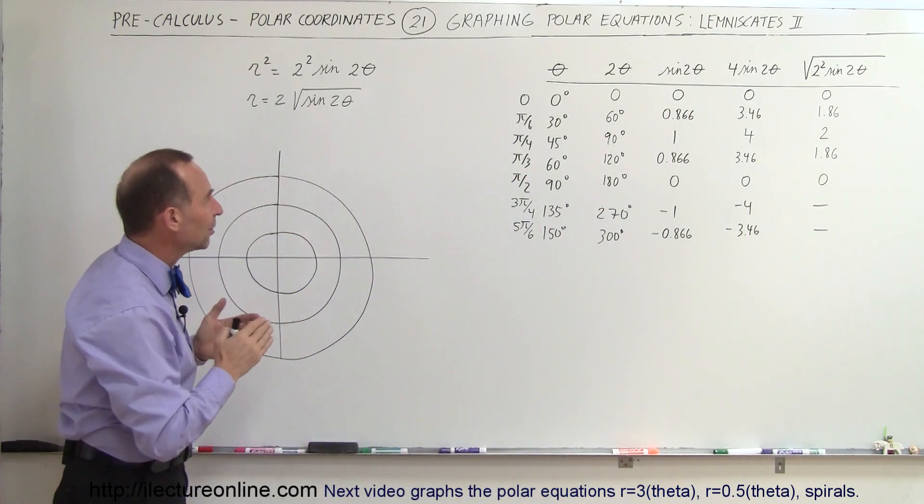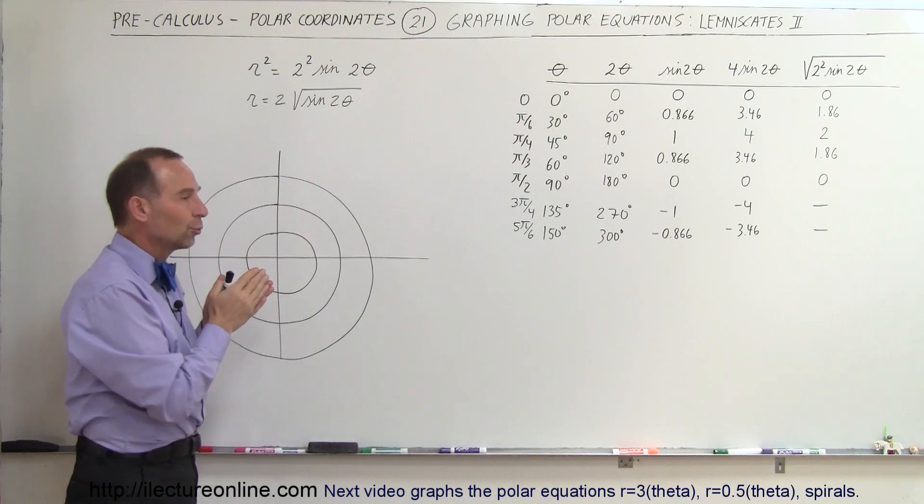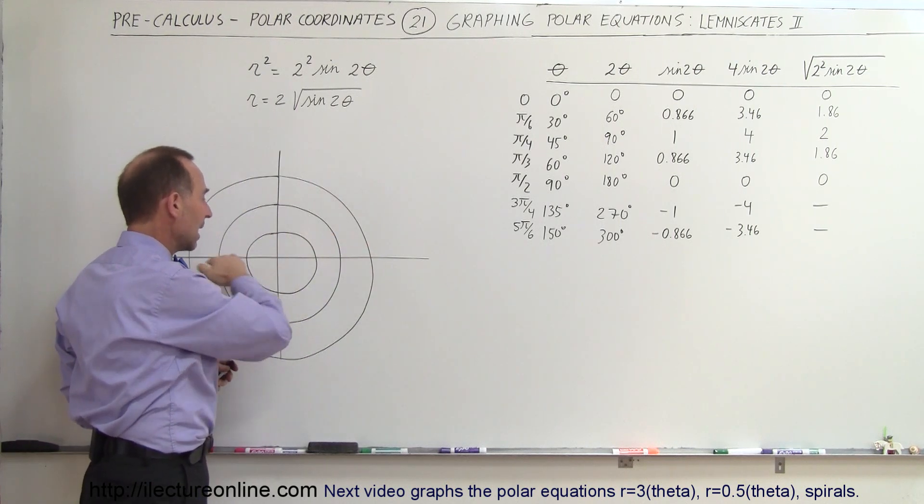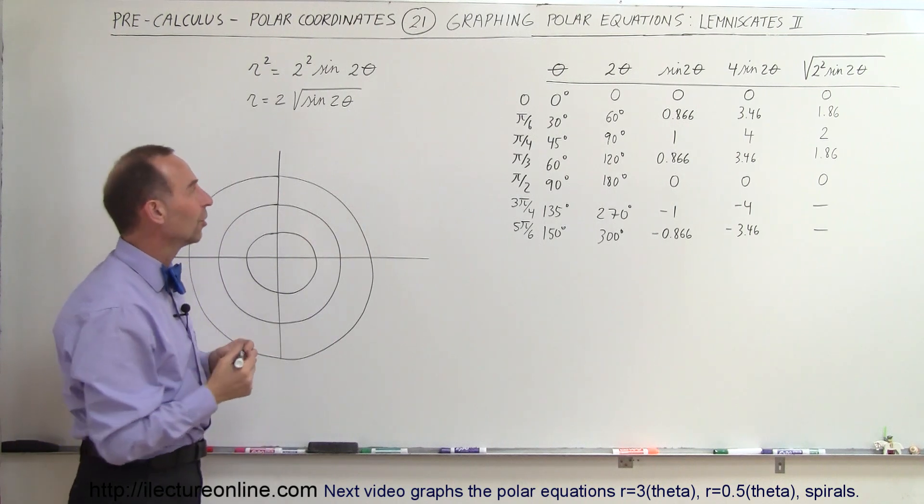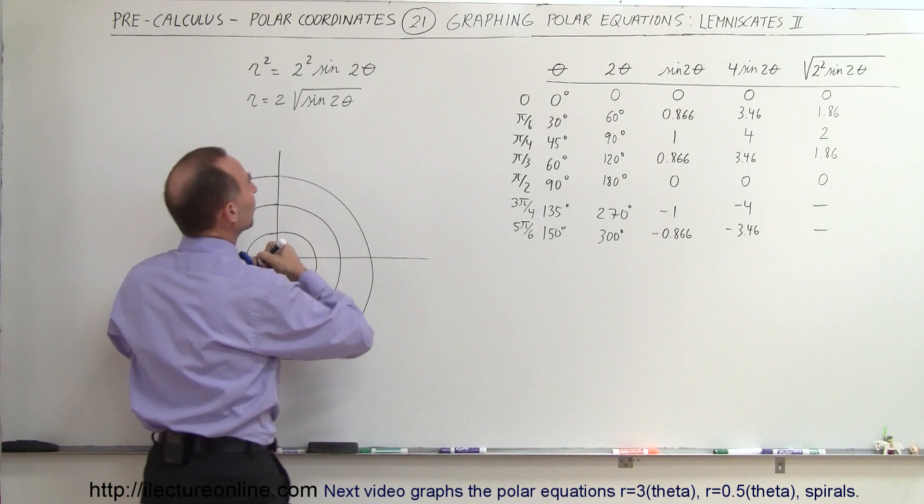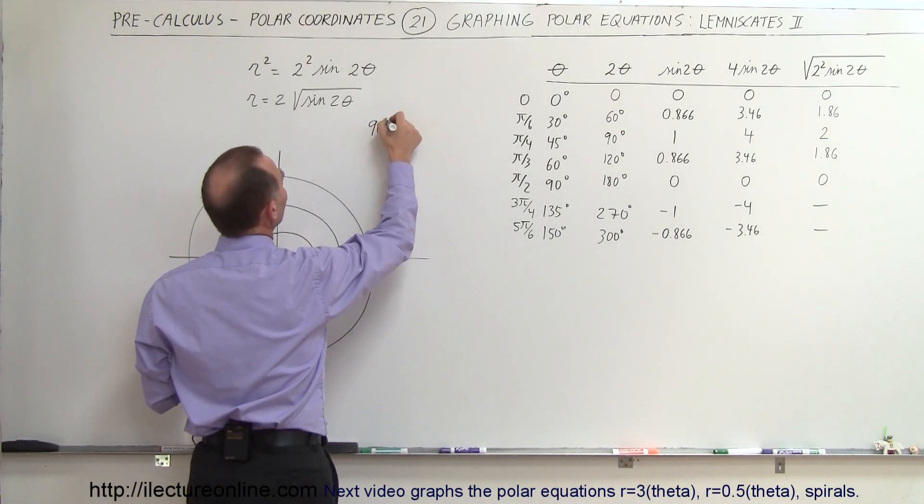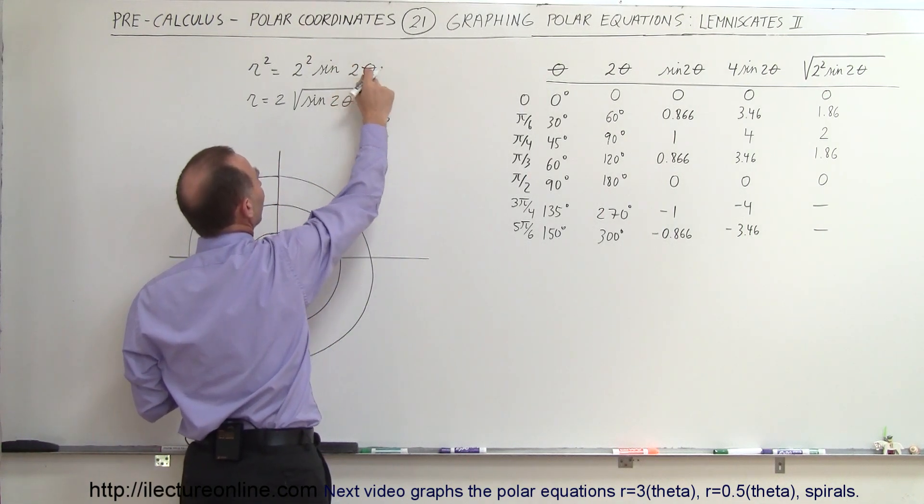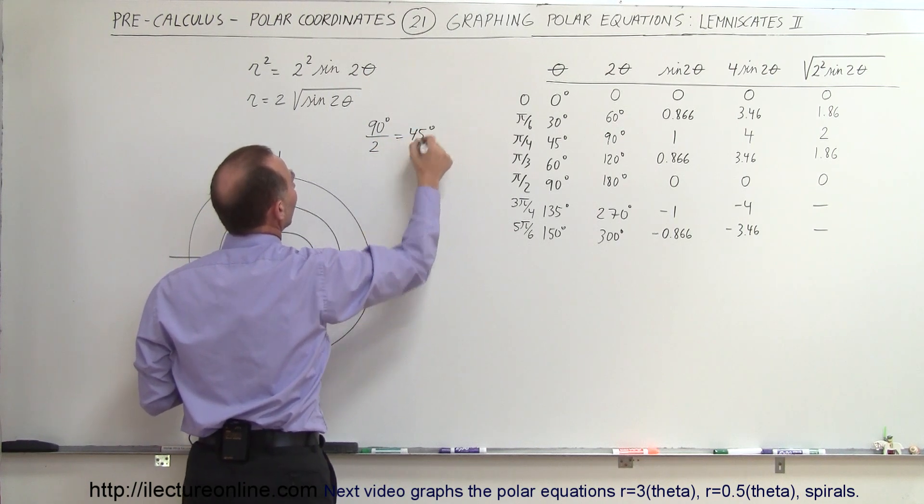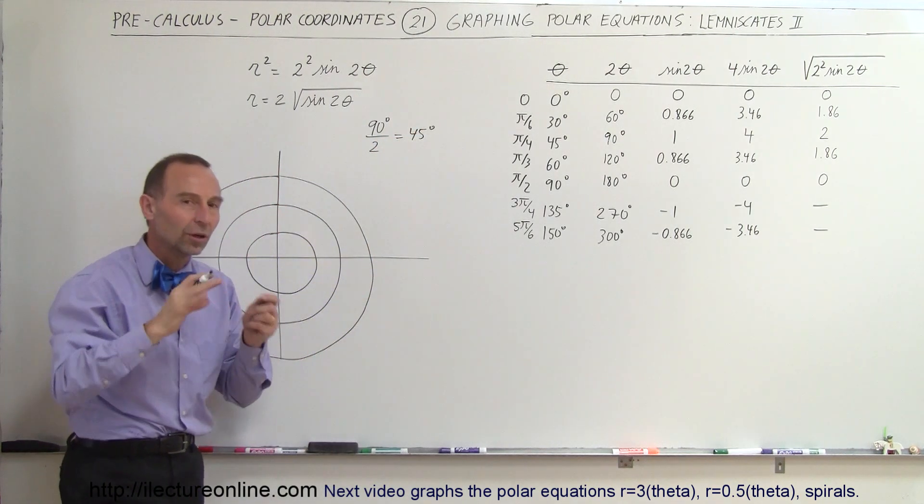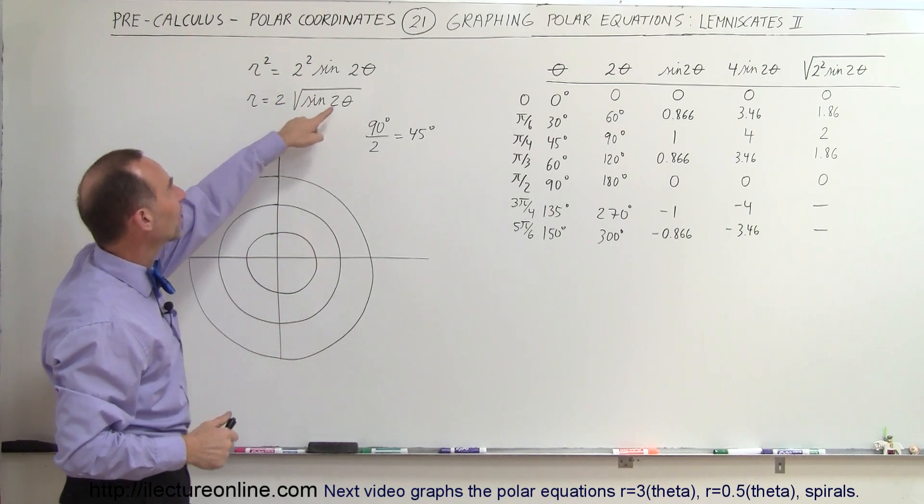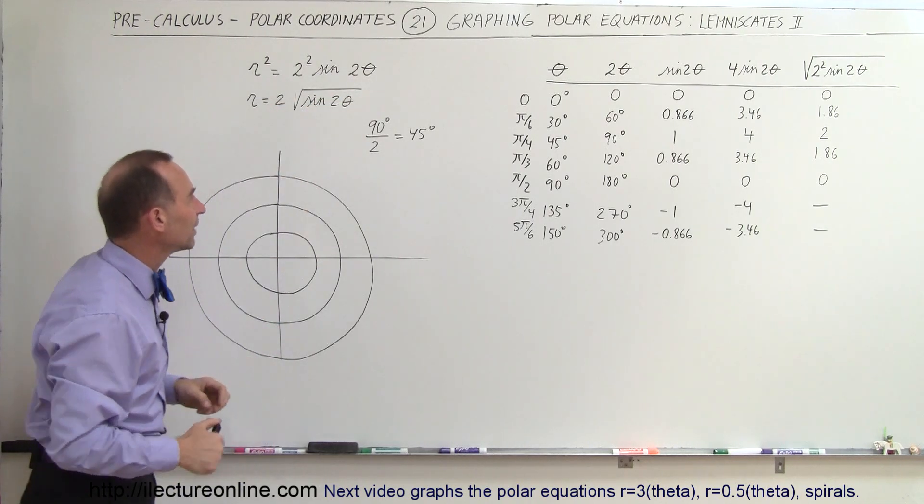Now the lemniscate for a sine function will not be drawn across the x and y axis, so to speak, because to find the place where you have the first sleeve of the lemniscate, what we're going to do is take 90 degrees and divide by the number in front of the angle theta, so divided by 2 which equals 45 degrees. It's the same thing that we do with the rose graph - to find the first leaf we take 90 degrees and divide by the number in front of the angle theta.